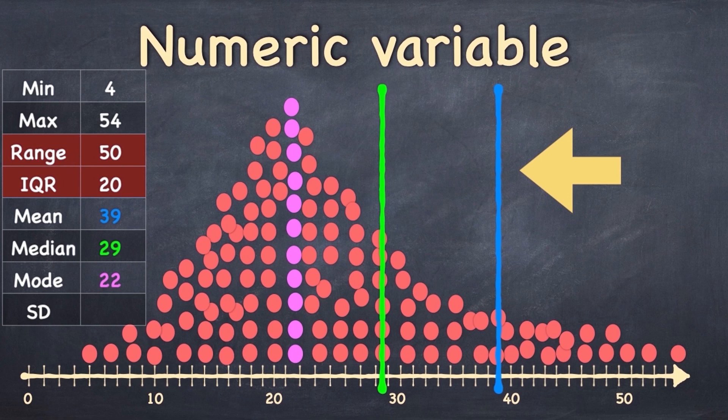Clearly, when the distribution is skewed, the median is a more robust measure of centrality.